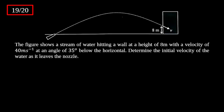The second question — not so simple, but manageable. The figure shows a stream of water hitting a wall at a height of 8 meters with a velocity of 40 meters per second at an angle of 35 degrees below the horizontal. Determine the initial velocity of the water as it leaves the nozzle. Since this is a projectile motion question, let's remind ourselves that acceleration in the x-axis is zero, so the final velocity in x always equals the initial velocity in x.